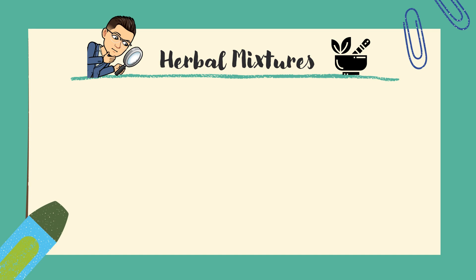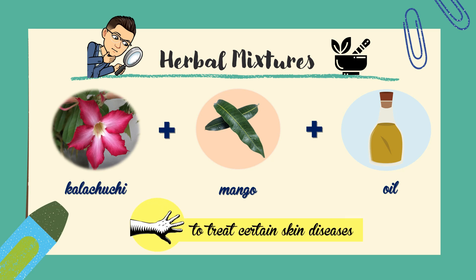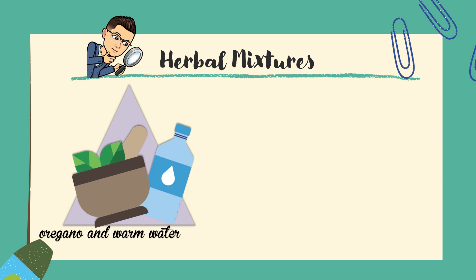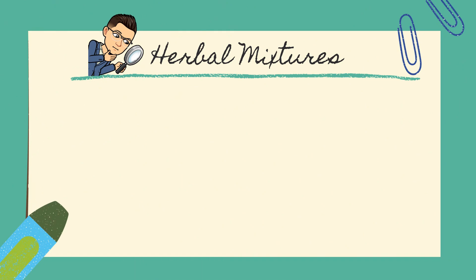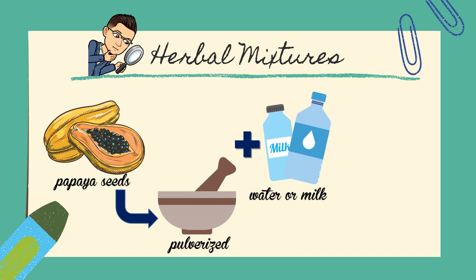Traditional and certain modern medicines make use of herbal mixtures that are available in your environment. These heterogeneous mixtures are used to treat some illnesses. Sap from leaves of plants like kalachuchi and mango are mixed with oil to treat certain skin diseases. Leaves of medicinal plants like oregano may be crushed and mixed with warm water to form a poultice, which is wrapped over joints and muscles to relieve pain. Some seeds of plants like papaya are pulverized and mixed in water or milk, and the resulting mixture is taken to help with deworming in humans.